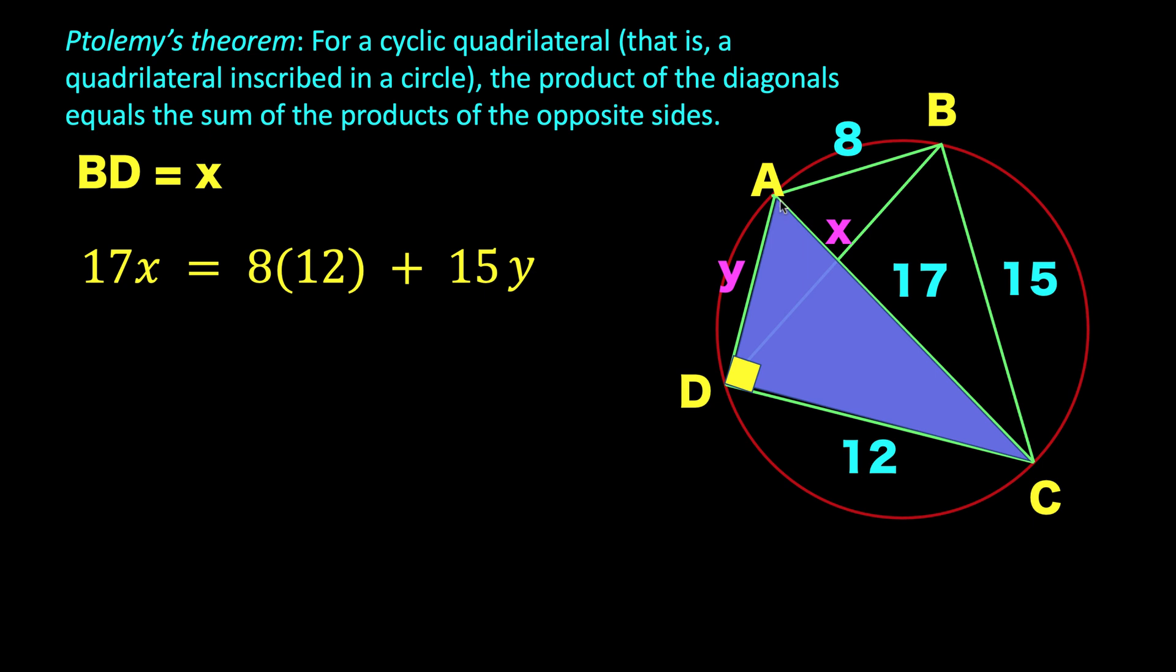And since we have a right triangle ADC, then we can apply the Pythagorean formula. The lengths of the sides of the right triangle ADC are 17 for the hypotenuse, 12 and Y for the two legs.